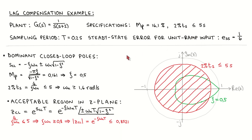To solve this problem we will first design a controller to satisfy the transient specifications. We start by determining the acceptable region in the z-plane for the dominant closed loop poles. The dominant continuous time closed loop poles can be written in terms of the damping and natural frequency as shown here. From the overshoot specification we calculate the damping as 0.5. From the settling time specification we calculate that the natural frequency should be greater than or equal to 1.6 radians per second. We now convert these specifications to the z-plane.